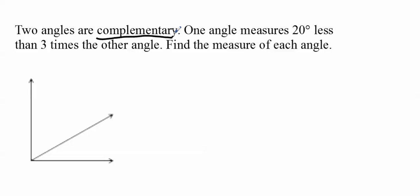So one angle measures 20 degrees less than 3 times the other angle. So I don't know which one is which, so I'm going to call this one X. And if I follow, it says 20 degrees less than 3 times the other angle. So 20 degrees less than 3 times, so 3X minus 20.